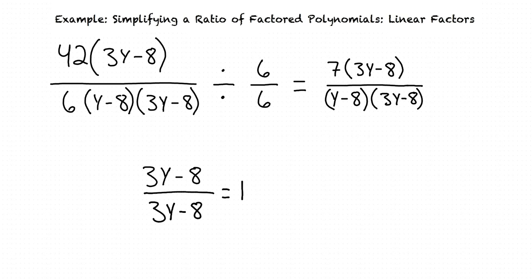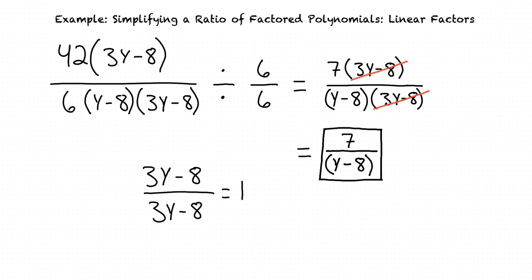Since (3y minus 8) divided by (3y minus 8) equals 1, we can cancel out both terms from the numerator and denominator. This leaves us with 7 divided by (y minus 8). Since we can't simplify any further, this is our final simplified expression.